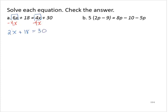Now I identify the variable term and isolate it. I will subtract 18 from both sides, yielding 2x is equal to 12. And then I will divide both sides by 2 to isolate the variable, yielding x equals 6.